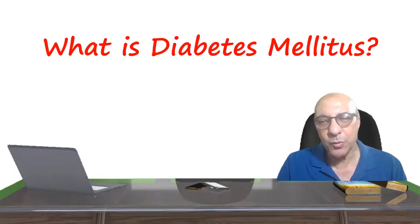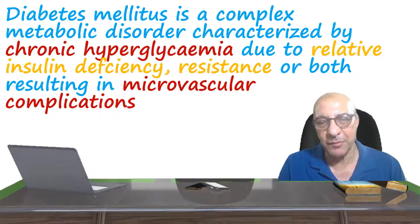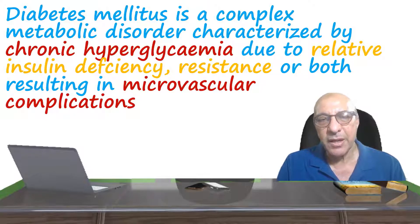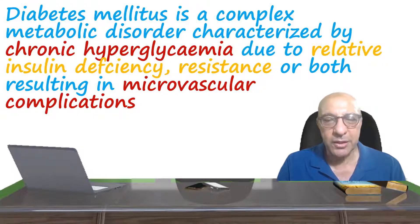What do we mean when we say somebody has diabetes mellitus? Diabetes mellitus is defined as a complex metabolic disorder — complex because of many complications and changes affecting metabolism — and it is mainly characterized by chronic hyperglycemia, with much higher glucose concentrations than normal. Exposure of tissues to this high blood sugar results in an increased incidence of microvascular complications. This hyperglycemia can be due to insulin deficiency, as in type 1, or due to insulin resistance, as in type 2.